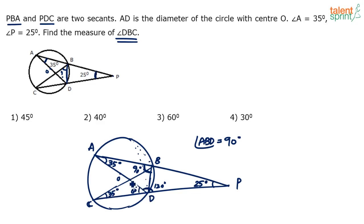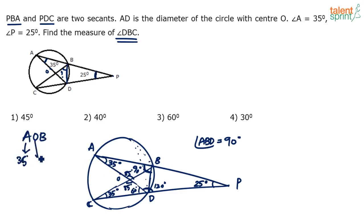Consider triangle COD. The sum of angles should be 180. So 60 and 35 is 95, meaning angle O in triangle COD should be 85 degrees. Opposite angles are equal, so the vertically opposite angle at O is also 85. Now consider triangle AOB: angle A is 35 and angle O is 85, so 35 plus 85 is 120, meaning angle B should be 60 degrees.